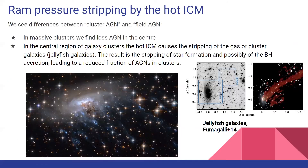There are two major things that we observe while studying AGN in galaxy clusters. The first is ram pressure stripping by the hot intracluster medium. We see differences between cluster AGN and field AGN. In massive clusters, we find less AGN in the center and more gas-poor galaxies in the central region, where the hot intracluster medium causes the stripping of the gas of cluster galaxies, stopping star formation and possibly black hole accretion, leading to a reduced fraction of AGN in clusters.